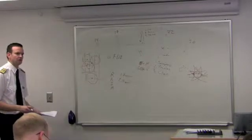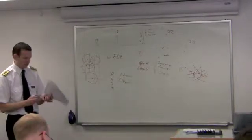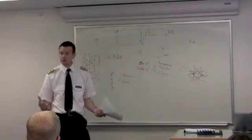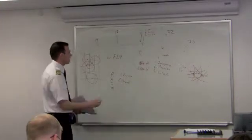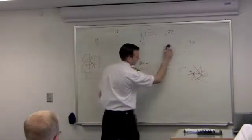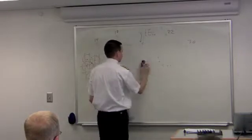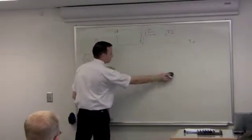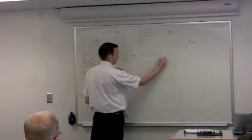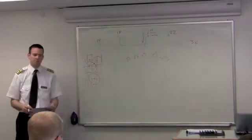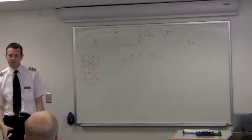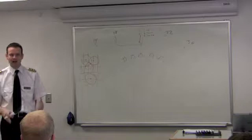So the FAA said, well, this isn't good enough for us, so they came up with WAAS. They said, all right, Mr. Department of Defense, if you guys can monitor them and find their errors, then so can we. So they came up with ground stations. There's about 38 of them right now all across North America. These 38 ground stations are precisely surveyed and cemented to the ground. What that means is they know their exact latitude and longitude.